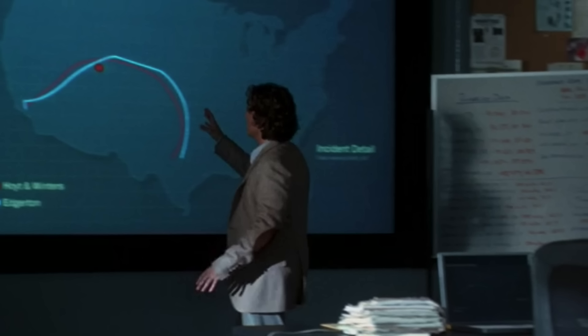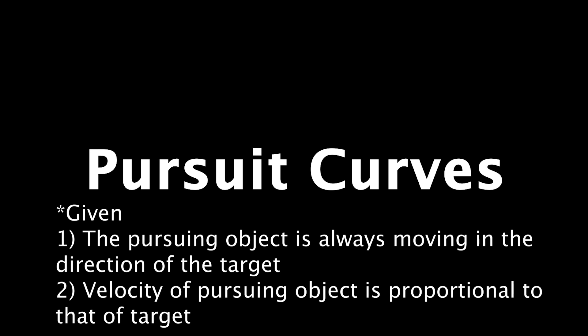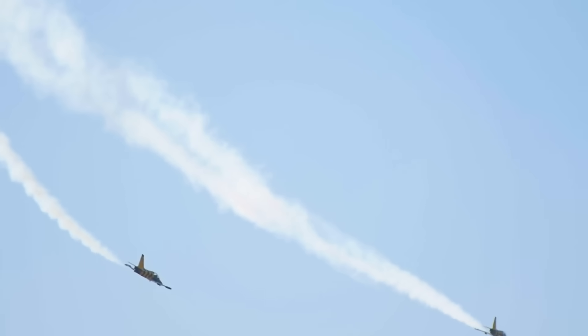When we plot your movements against those of your targets, the pattern makes itself known. And when we plot your path against Oil and Winters, we got this. Yeah, this is the Red Desert robbery, the missing point on a curve that I didn't even realize I was looking at. It's a variation on something called a pursuit curve.